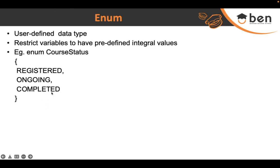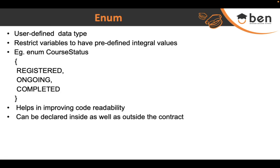So Registered is 0, Ongoing is 1, and Completed is 2 — but we define enumerations to make things more readable and restrictive. Enumerations help improve code readability. Similar to structs, enums can be declared inside as well as outside contracts. If you import a file containing an enum into another smart contract, you can use that enum directly.